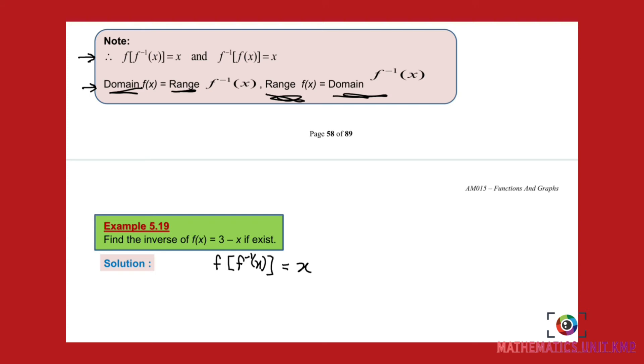So what is f(x)? 3 minus x. So it becomes 3 minus f inverse x, as you have learned before in composite functions. And then just like that, you just rearrange the equation. You should get f inverse x equals 3 minus x. That's how you find the inverse of a particular function.